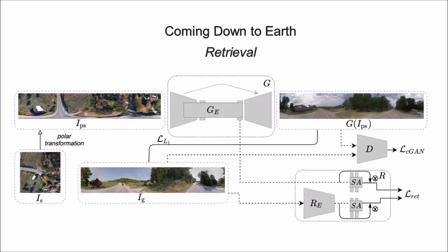The last module of our network is the retrieval module, where the localization happens. This module consists of two parts: an encoder RE, which takes the ground view as input, and a spatial attention module A that converts obtained local features into global descriptors.